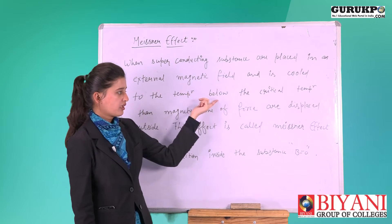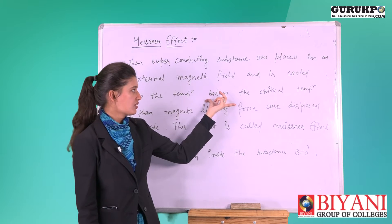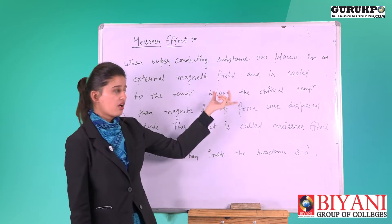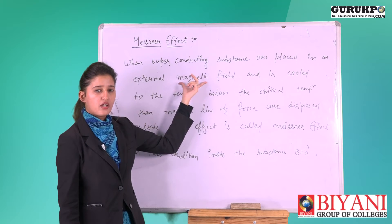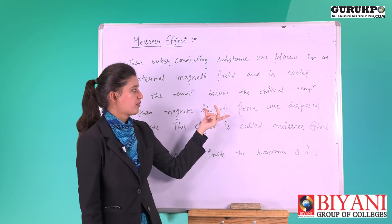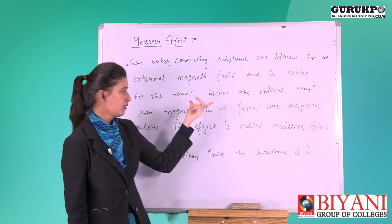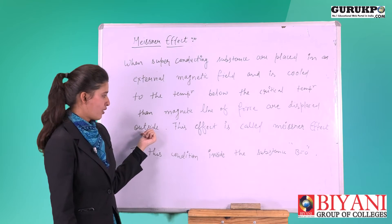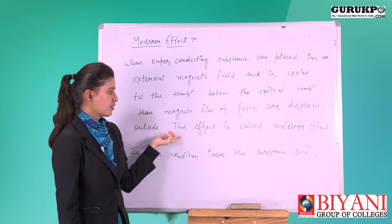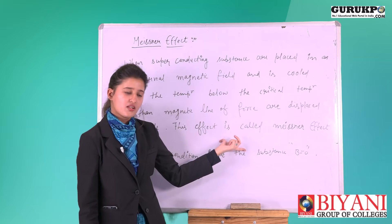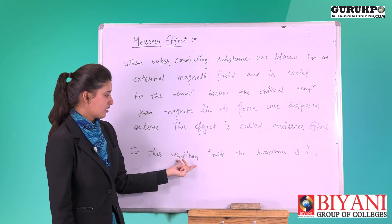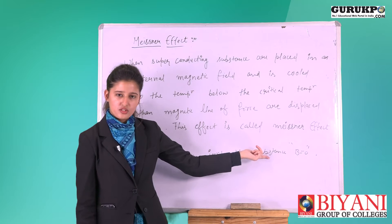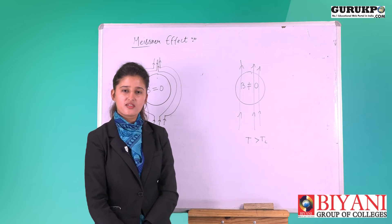...the condition is: a superconducting substance placed in an external magnetic field and cooled below the critical temperature. Then the magnetic lines of force are displaced outside. This effect is called the Meissner effect. It means inside the substance, in this condition, B is equal to zero.